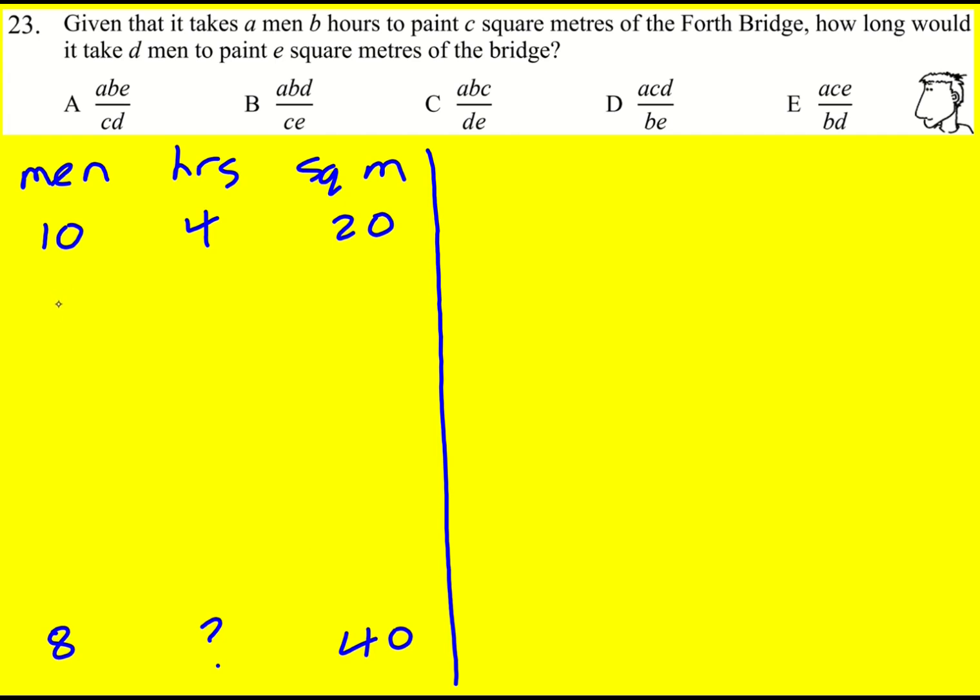One thing we could do is we could divide the number of men by 5 to make it 2, because then I can times through by 4 in a minute. So that means it's going to take 5 times as long, so times by 5 here, keeping the square meters exactly the same.